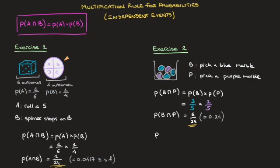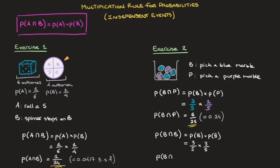How about the probability of picking a blue marble followed by another blue marble? Again, we're dealing with independent events, so we can use the same formula. That equals the probability of picking a blue marble times the probability of picking a blue marble, which is 3 over 5 times 3 over 5. Multiplying these together, the probability of picking a blue marble followed by another blue marble equals 9 over 25, or as a decimal, 0.36.